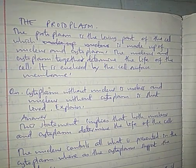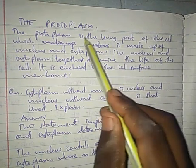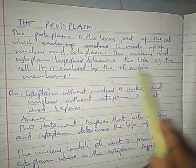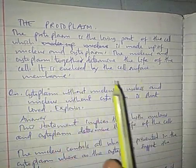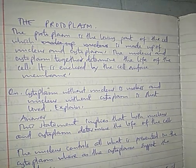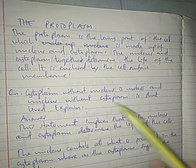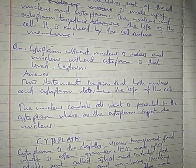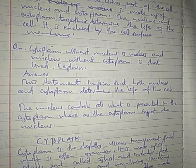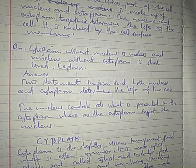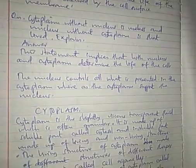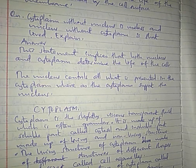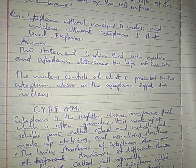Before discussing organelles, let us discuss the concept of protoplasm. Protoplasm is the combination of cytoplasm and nucleus — it is the living part of the cell, enclosed by the cell surface membrane. Nucleus and cytoplasm together determine the life of the cell. Sometimes you may be asked: cytoplasm without nucleus is useless, and nucleus without cytoplasm is short-lived — this is because both nucleus and cytoplasm determine the life of the cell.